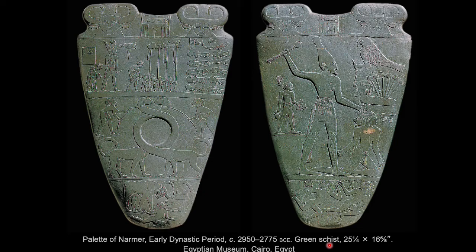Most of the figures here are in a composite view, meaning each part of the body is shown in its most recognizable or characteristic form. The figures' heads, hips, legs, and feet are in profile, striding to show both legs, while the eyes, shoulders, and torso are frontal, as if facing forward. This was a general convention in Egyptian art for portraying royals or people of higher status, whereas people of lower status would often be shown in more lifelike positions engaged in active tasks. The depiction of the sandal bearer in a composite view shows his status, even though he is lower in status than the king.